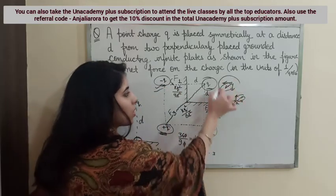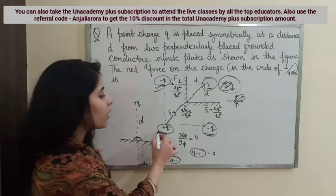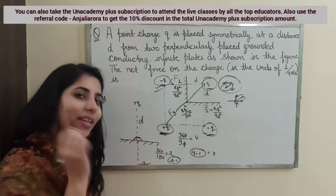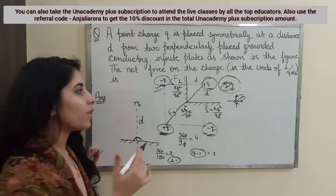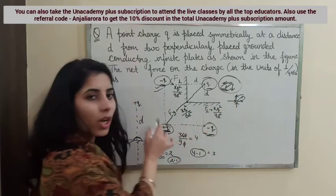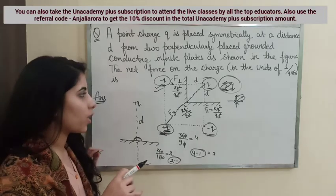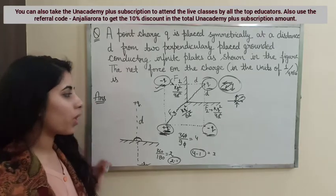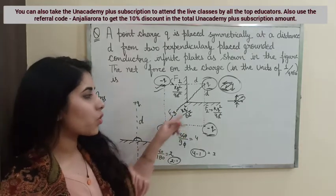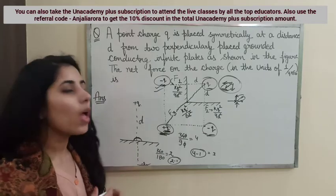Finally, after getting the resultant of the forces from the two minus Q image charges, you also account for the force due to the plus Q image charge. Simplify the resultant together with that force, and that gives you your final answer. Some of the values are also mentioned in the figure.